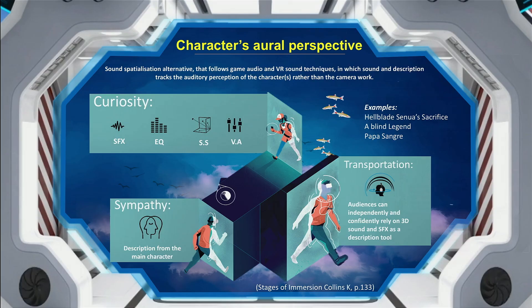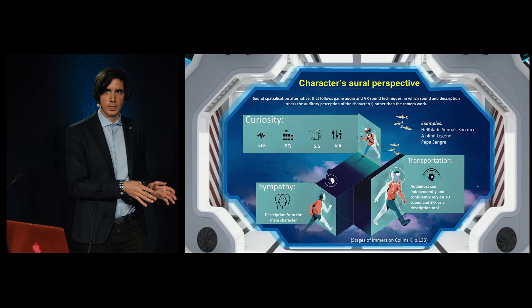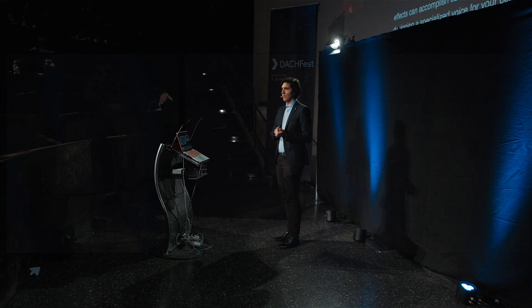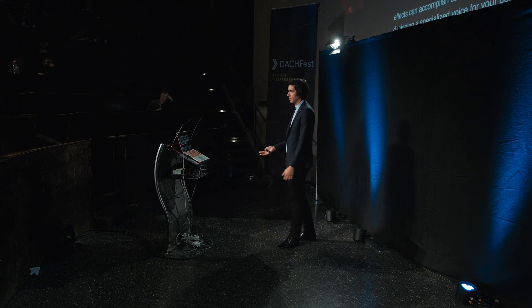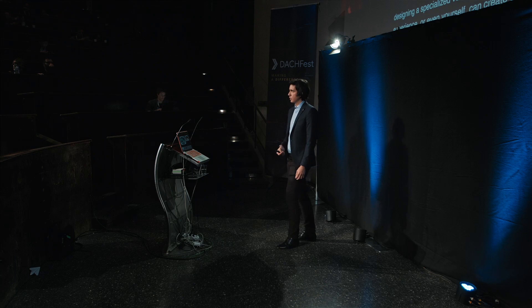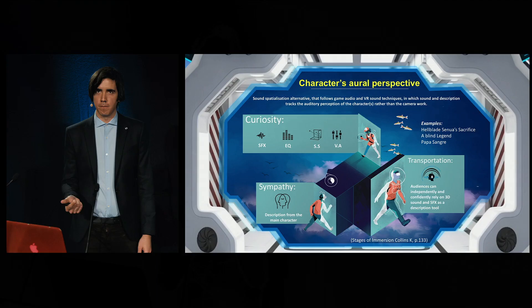3D sound, the concept of oral audio introduction, and the enhancement of sound effects can accomplish curiosity. Sympathy can be accomplished by, instead of asking an audio describer to describe your content, you can ask or design a specialized voice for your content — so the character of your experience, or even yourself, can describe the visual elements of your content, in order to create a special bond between you and your product. By doing that, we accomplish transportation, we describe the elements that we want our audiences to listen to, and we can create an immersive storytelling experience that is not only accessible for the visually impaired, but could also be functional for those who are sighted.